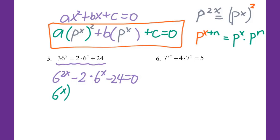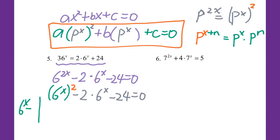You got to know that's the pattern for an exponential equation. So we get 6x squared, then minus 2 times 6x power minus 24 equal to 0. Then set up 6 to the x power equal to y — you can set up any variable you like. So I get y squared minus 2y minus 24 equal to 0.